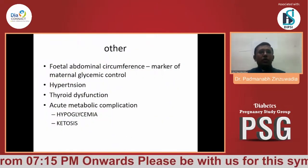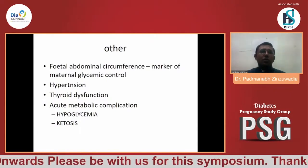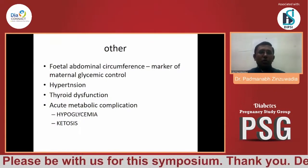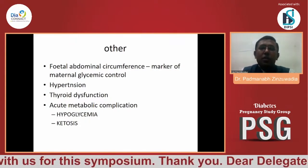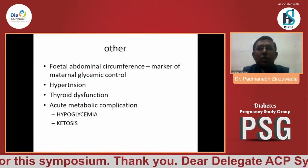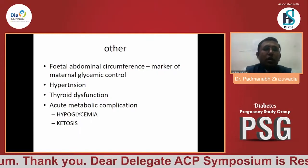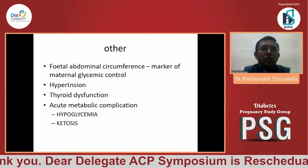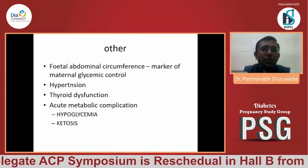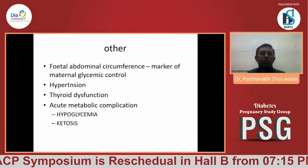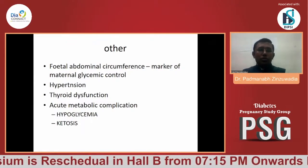Monitoring should also include fetal abdominal circumference, which is a marker of maternal glycemic control. Better rapport and communication with gynecology colleagues gives an idea of how we are progressing in GDM management. We must also address other comorbidities if present, such as hypertension and thyroid dysfunction. We need to keep in mind that hypoglycemia and ketosis should be avoided.